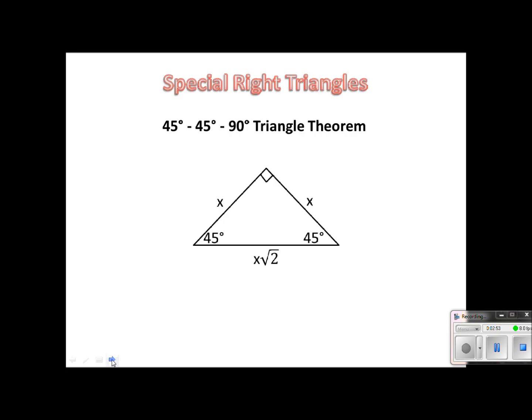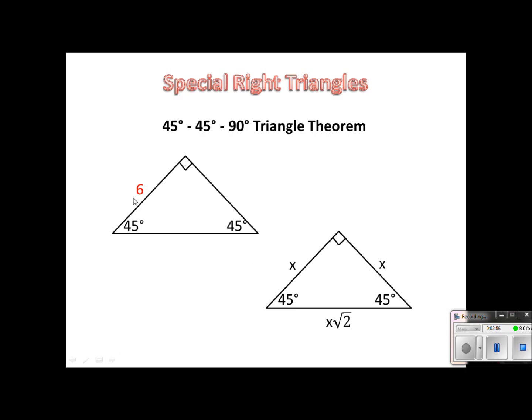So if we put some numbers in, if I were given that one of the legs is 6, of course, because it's isosceles, the other one is also going to be 6. And then just take this 6 and then multiply it by root 2. And that will give us the length of the hypotenuse.